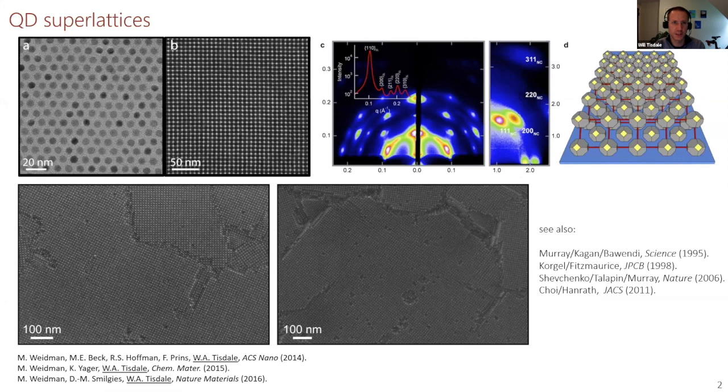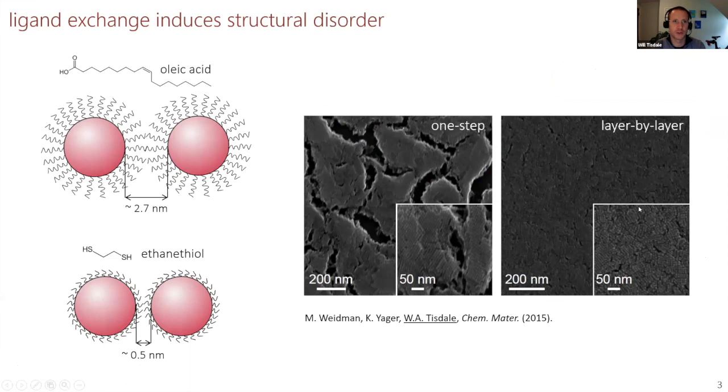Quantum dots are really intriguing materials. They're a great play system for testing theories of exciton and charge transport because we have so much synthetic tunability in terms of their size, size dispersity, surface functionalization, and the electronic coupling between neighboring sites. It's really a system that you have tremendous synthetic control over. We've had a blast studying these materials. They self-assemble into an array of ordered structures. But if you want to get good exciton transport, you need to increase the strength of electronic coupling. The native long chain fatty acid ligands need to be exchanged for shorter ligands.